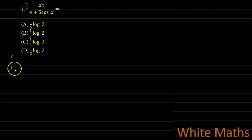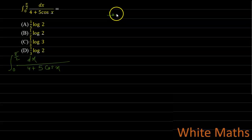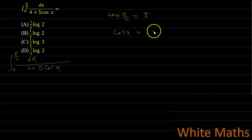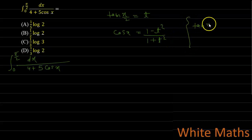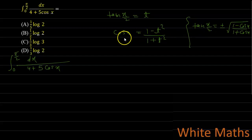The integral is ∫₀^(π/2) dx/(4 + 5cosx). To evaluate this, assume tan(x/2) = t. Then cos x becomes (1 − t²)/(1 + t²), because tan(x/2) in terms of cos x is ±√((1 − cosx)/(1 + cosx)). We put t in place of tan(x/2), square both sides, and cross-multiply to find cos x in terms of t, giving cos x = (1 − t²)/(1 + t²).